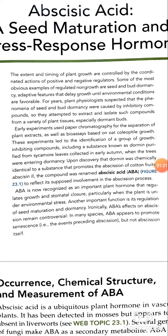Early experiments used paper chromatography for the separation of plant extracts, as well as bioassays based on oat coleoptile growth. These experiments led to the identification of a group of growth-inhibiting compounds, including a substance known as dormin, purified from sycamore leaves collected in early autumn when the trees were entering dormancy.